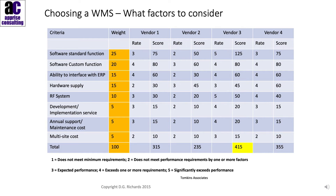This is an example of a decision table for choosing a warehouse management system. We can see the criteria on the left-hand side: software as a standard function, the ability to customize the software, the ability to interface with maybe the ERP system that we're utilizing, whether they supply the hardware, whether it's a radio frequency system, what kind of development and implementation service do they provide, what about their annual support and maintenance cost, and can they provide a warehouse management system across multiple sites. Here we've got a weighting — we've looked at the importance of each of those criteria.